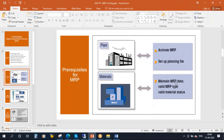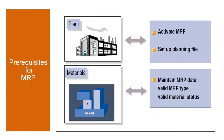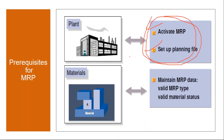After that, you need to maintain the MRP data in the material master. Once you activate MRP and set up the planning file entries — this is a one-time initial requirement — for all materials in the material master, you have to maintain a valid MRP type and valid material status. This is master data.